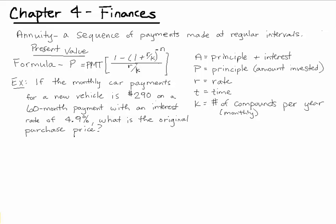When our annuity is something such as a monthly car payment, we're interested in knowing the present value. That is how much the car was purchased for, the original purchase price.